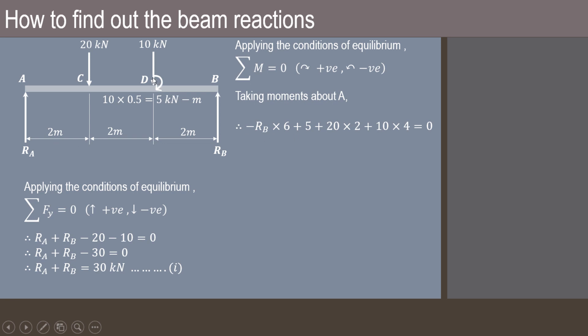There is already a moment of clockwise moment of 5 kN-meter acting because of the eccentric load. Then this 20 kN will also produce clockwise moment. From D to A the perpendicular distance is 2 + 2 that is 4.